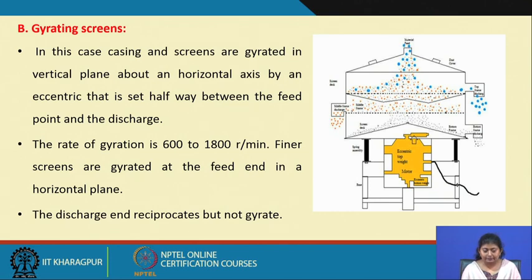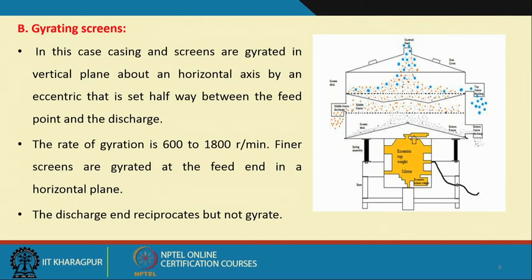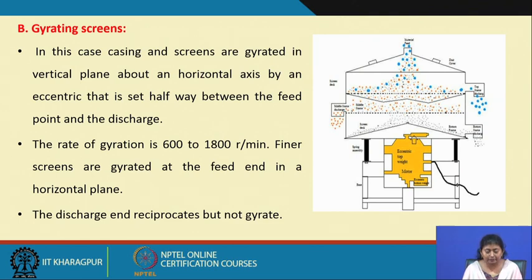Gyrating screens: in this case, the casing and screens gyrate in a vertical plane about a horizontal axis by an eccentric set halfway between the feed point and the discharge. The rate of gyration varies from 600 to 1800 revolutions per minute. Finer screens are gyrated at the feed end in a horizontal plane and the discharge end reciprocates but does not gyrate. Gyrating screens are very commonly used to separate different fractions of material.